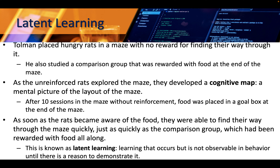Tolman placed hungry rats in a maze with no reward for finding their way through it. He also studied a comparison group that was rewarded with food at the end of the maze. As the unreinforced rats explored the maze, they developed a cognitive map — a mental picture of the layout of the maze. After 10 sessions without reinforcement, food was placed in a goal box at the end. As soon as the rats became aware of the food, they were able to find their way through the maze just as quickly as the comparison group that had been rewarded all along. This is known as latent learning — learning that occurs but is not observable in behavior until there is a reason to demonstrate it.